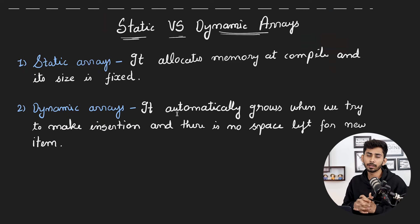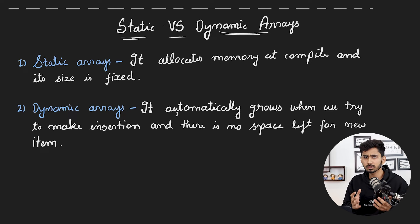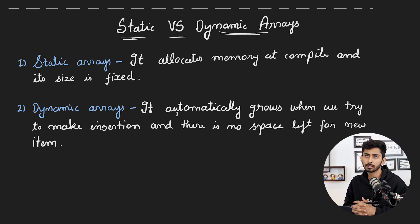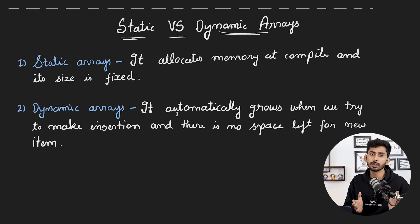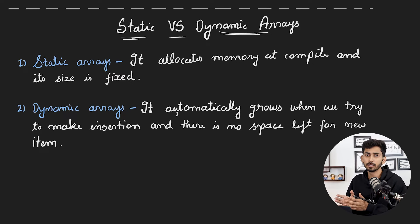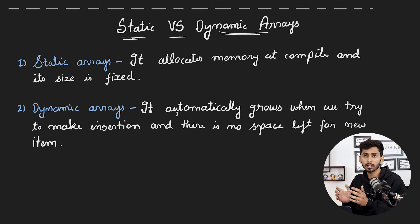Arrays are divided into static arrays and dynamic arrays based on memory allocation. Static arrays allocate memory at compile time and the size is fixed — you cannot increase or decrease it. If you declared an array of size 10, that is a static array. Dynamic arrays, on the other hand, grow in size. If the array has capacity 10 and you want to insert an 11th element, array resizing takes place: a new array double the size of the previous one is allocated, all content is copied over, and the 11th element is appended at the end.